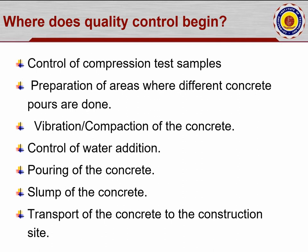Where does quality control begin? It leads to control of compression test samples. As per IS 456, concrete samples must be taken under specific conditions — for a given quantity, a specific number of samples (three cubes) must be taken. There should be tests in the field as well as in the laboratory to maintain durability factors. Preparation of areas where different concrete pours are done should be identified — for example, for a staircase start with fresh concrete, and for slabs identify which corner to start and finish from, and where concrete from a new plant will be used.